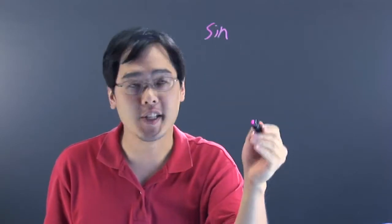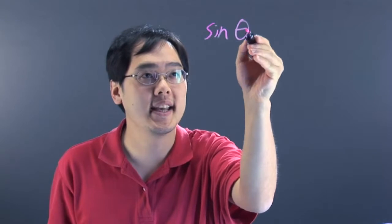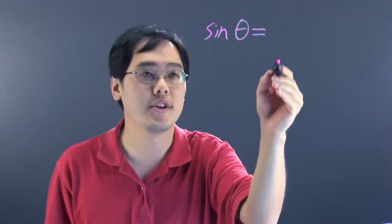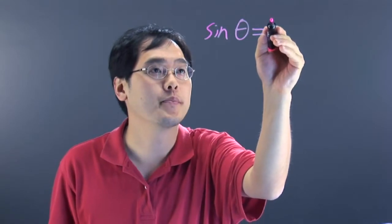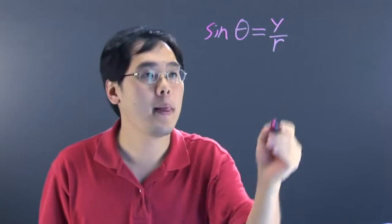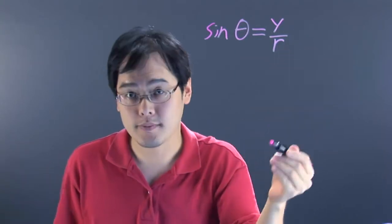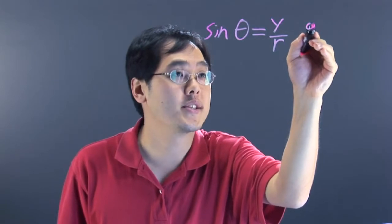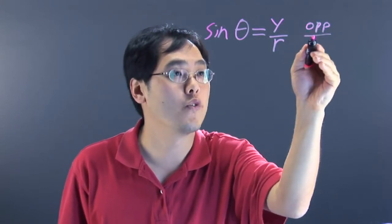S-I-N-E is how it's actually spelled, but we're going to abbreviate it sin theta for an angle for short. Now, there's two ways to think about the sine definition. You can think of the sine as either the y-coordinate over the radius of a circle, which is R, or if you're in triangle context, or right triangles per se, you can think of this as the opposite leg over the hypotenuse.